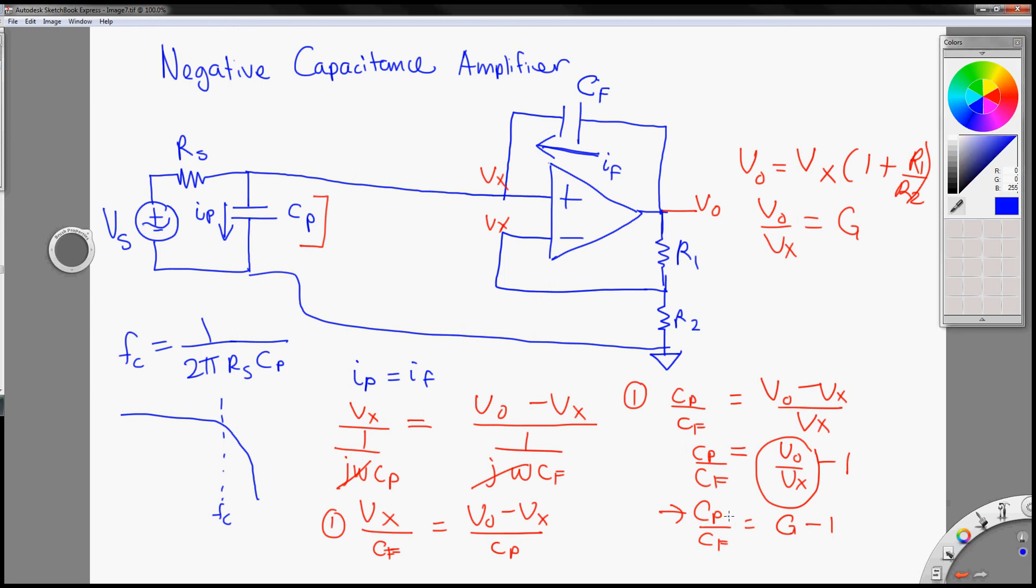Or, in a more practical term, you just set a value Cf in the middle range, and then you can adjust the gain later on, so that you can measure the Vout.